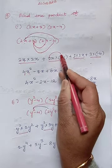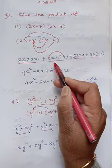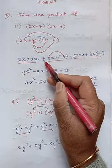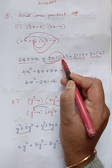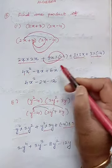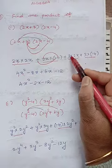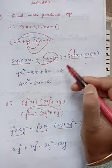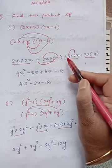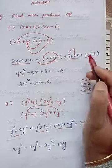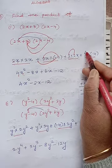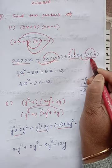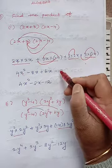2 fours are 8, remaining 1x. Now we will multiply the signs: plus into minus is minus. Here 3 twos are 6, remaining 1x. Here only 1 plus, no problem. Here 3 fours are 12, plus into minus is minus.